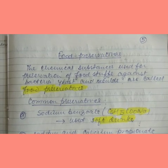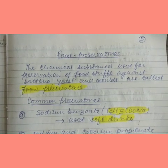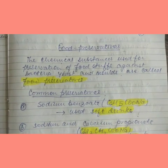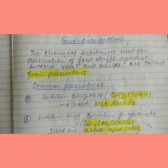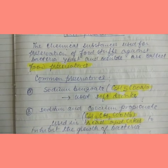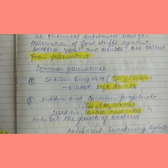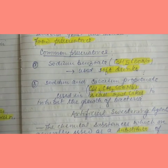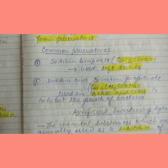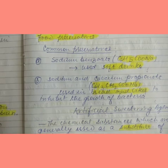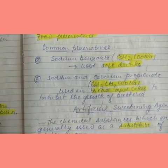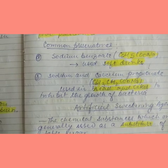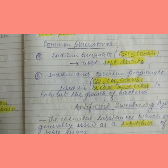Food preservatives are chemical substances used for preservation of foodstuffs against bacteria, yeast, and mold. Common food preservatives are sodium benzoate (C₆H₅COONa), used in soft drinks, and sodium and calcium propionate (CH₃CH₂COONa), used in bread and cakes to inhibit the growth of bacteria.